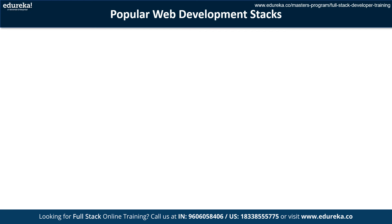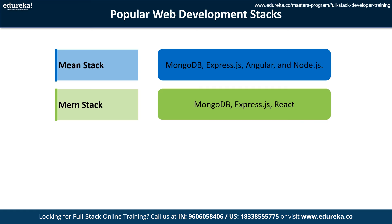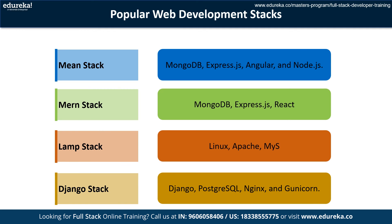Moving on to popular web development stacks: the MEAN stack includes MongoDB, Express.js, Angular, and Node.js. The LAMP stack features Linux, Apache, MySQL, and PHP. The Django stack combines Django, PostgreSQL, Nginx, and Gunicorn.